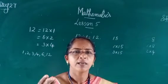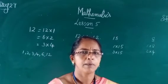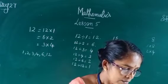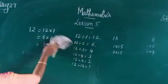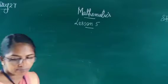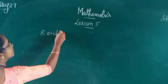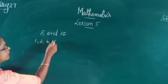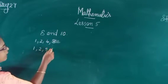Common factors means: if we consider two or more numbers, we write the factors of each number, then collect the factors that are common. For this, consider the two numbers 8 and 10. Factors of 8 are 1, 2, 4, and 8. Factors of 10 are 1, 2, 5, and 10.